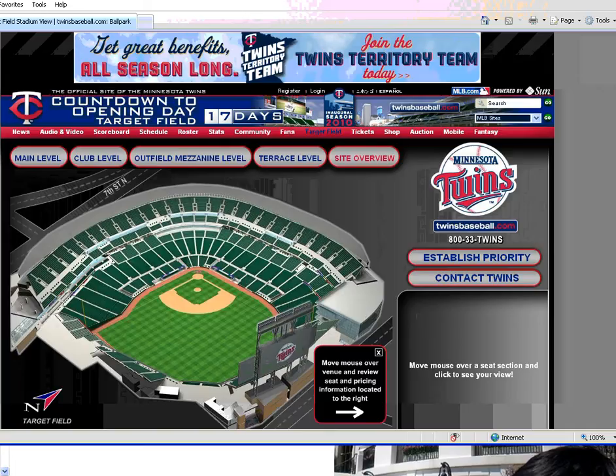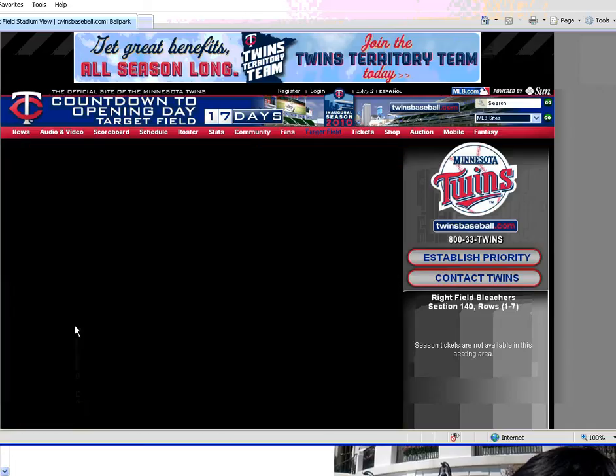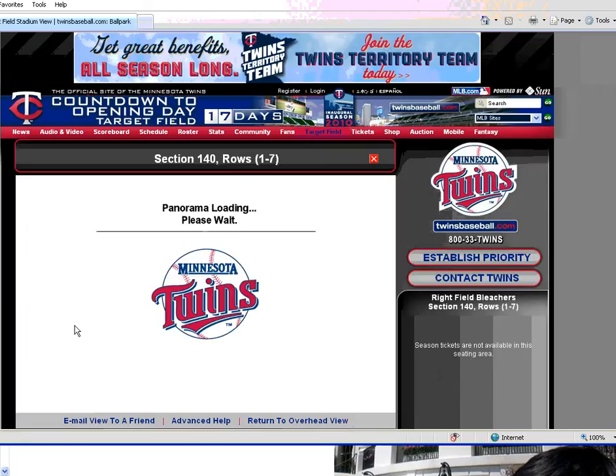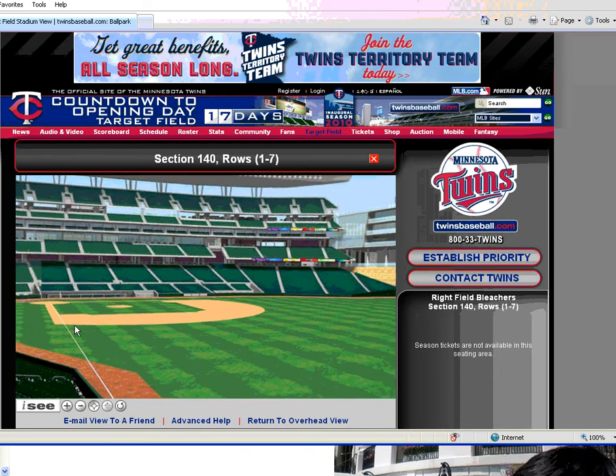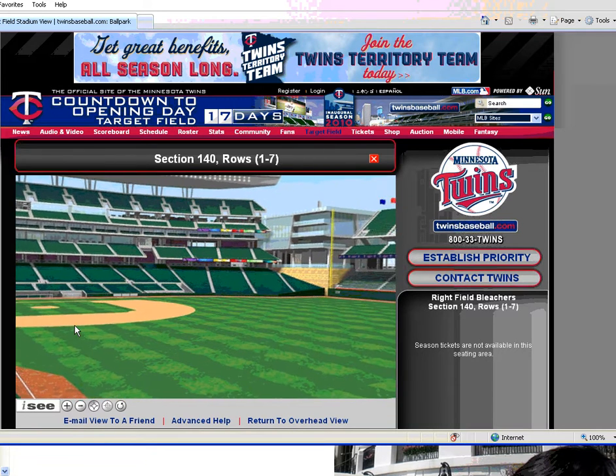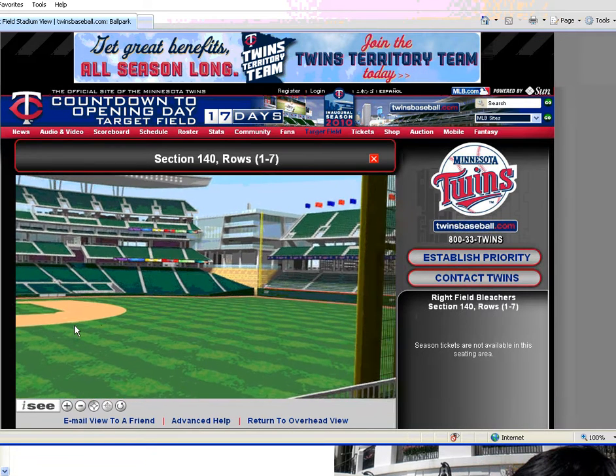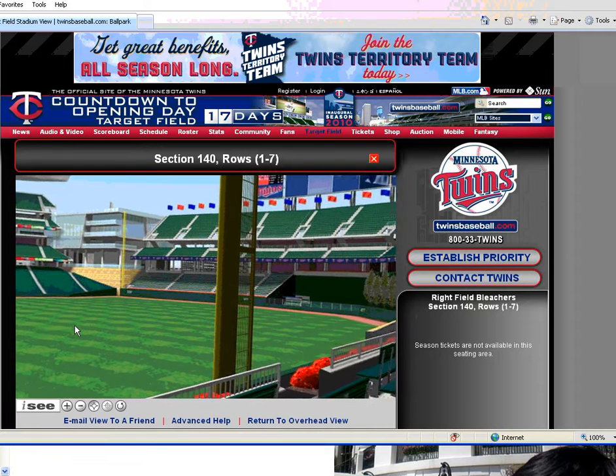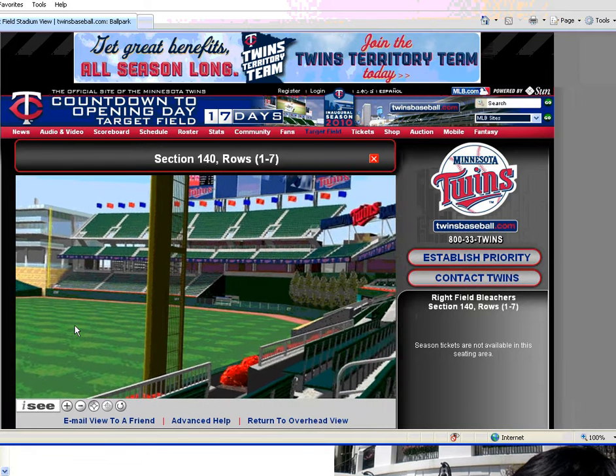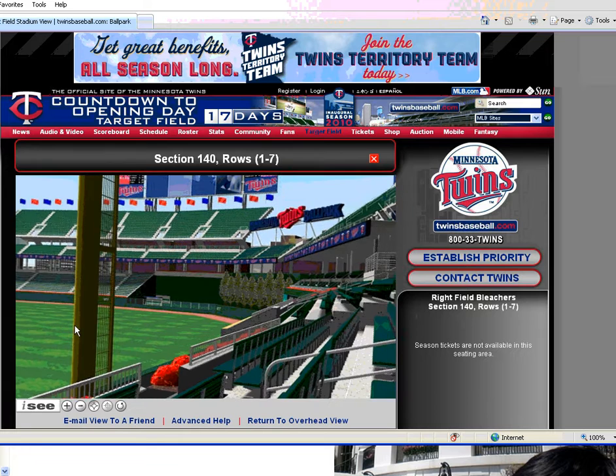On special nights they'll even be cheaper. Your standard price if you click out in the outfield here, it's gonna show me where those, what the view would be from those seats. That'd be section 140, rows 1 through 7. If you were in those seats in the outfield, that's what it would look like. It's kind of cool to be able to get that 3D kind of feeling.